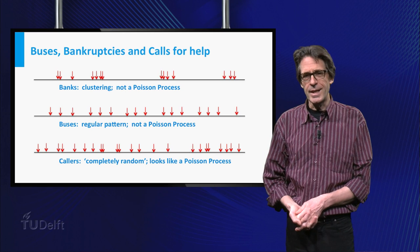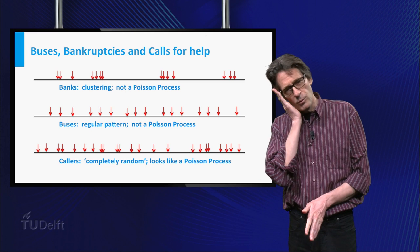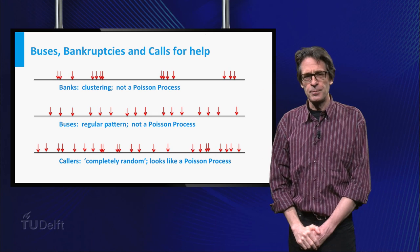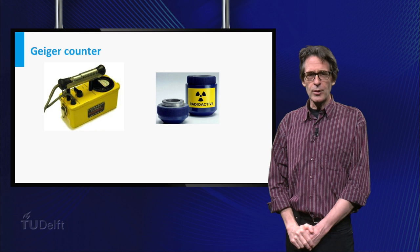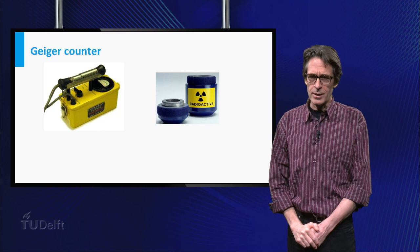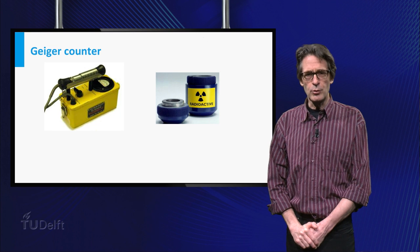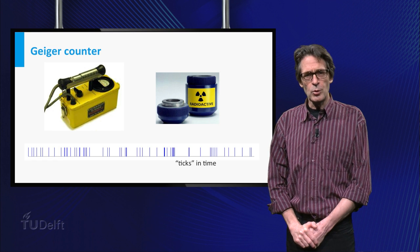Well, I guess the intensity will be lower during the night. So let's say we only consider office hours. Another physical context where the Poisson process gives quite an accurate approximation is the ticks a Geiger counter gives off in the vicinity of some radioactive source.